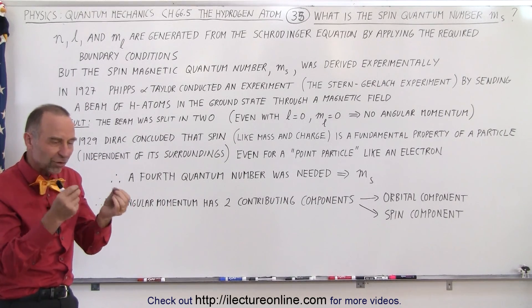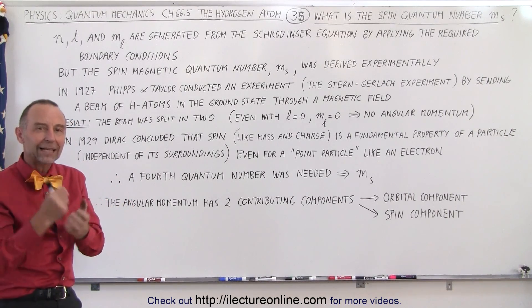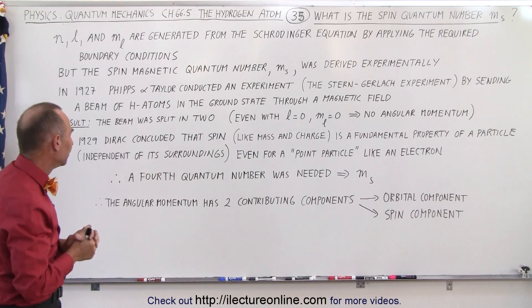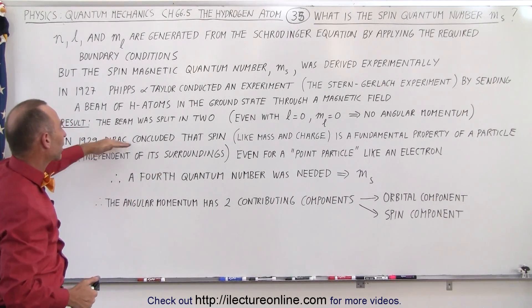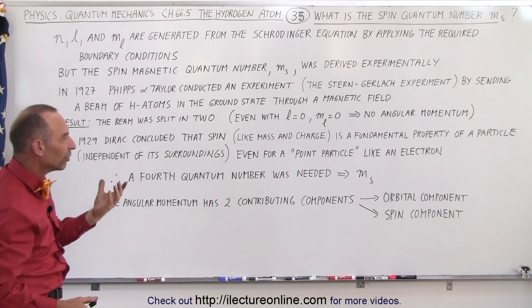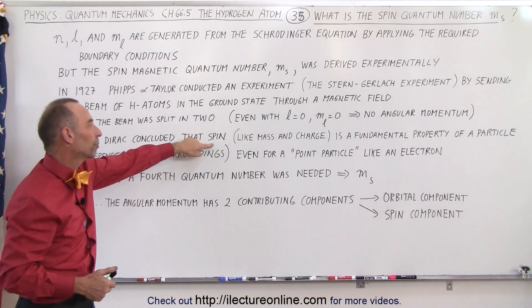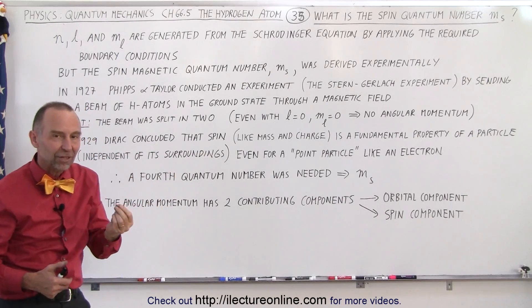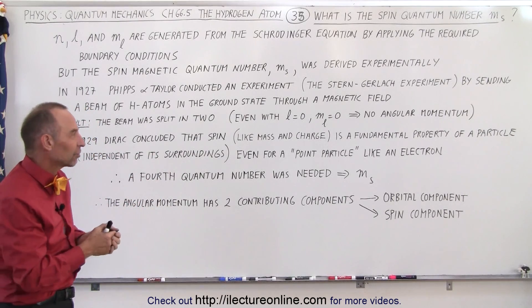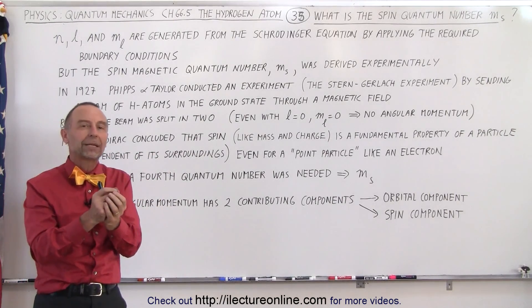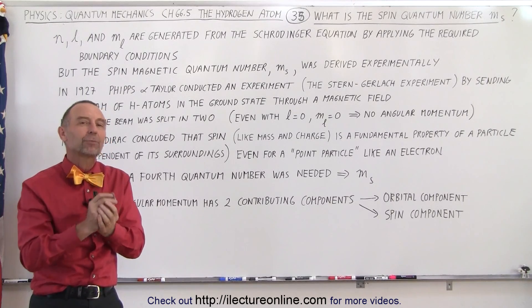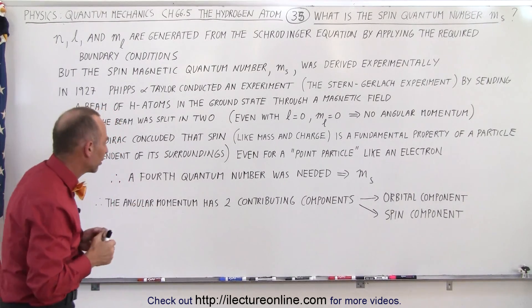There had to be some other intrinsic property of that electron to cause that to happen. In 1929, Dirac concluded that there was another fundamental property of the electron, which they called the spin. Just like mass is a fundamental property of an electron,